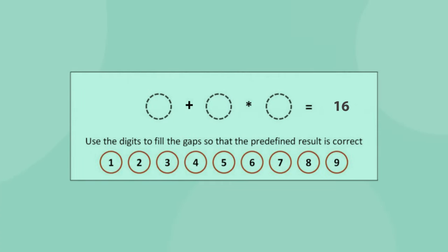As you can see, you are presented with a basic numeracy equation containing a predefined result, empty spaces and operators. Your task is to find a combination of digits that will replace the empty spaces and make the equation correct. Remember, each digit can be used only once. Did you solve the question?